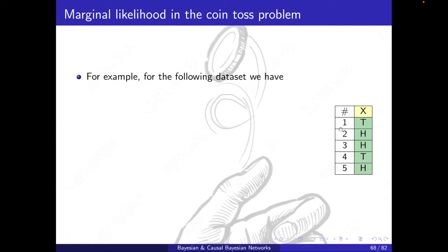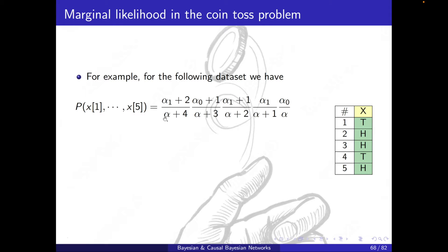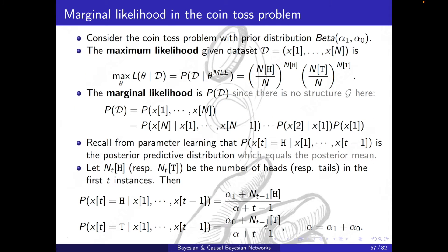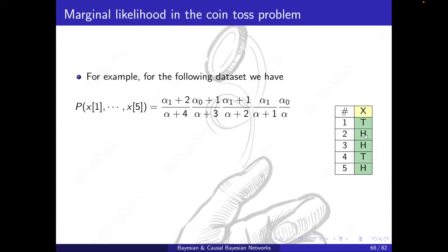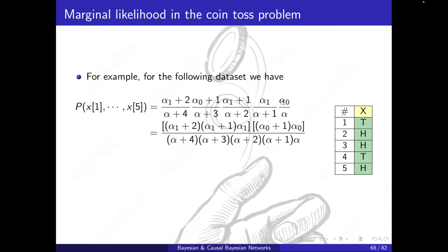Let's see an example with five instances. The joint probability is written using the chain rule formula. For p(x1) — a tail — I have alpha_0 in the numerator with zero prior occurrences, divided by alpha. For the second instance — a head — alpha_1 plus zero prior heads, divided by alpha plus 1, and so on. Rearranging so all alpha_1 terms and all alpha_0 terms are grouped together, I can use the gamma function to write it in a compact form.